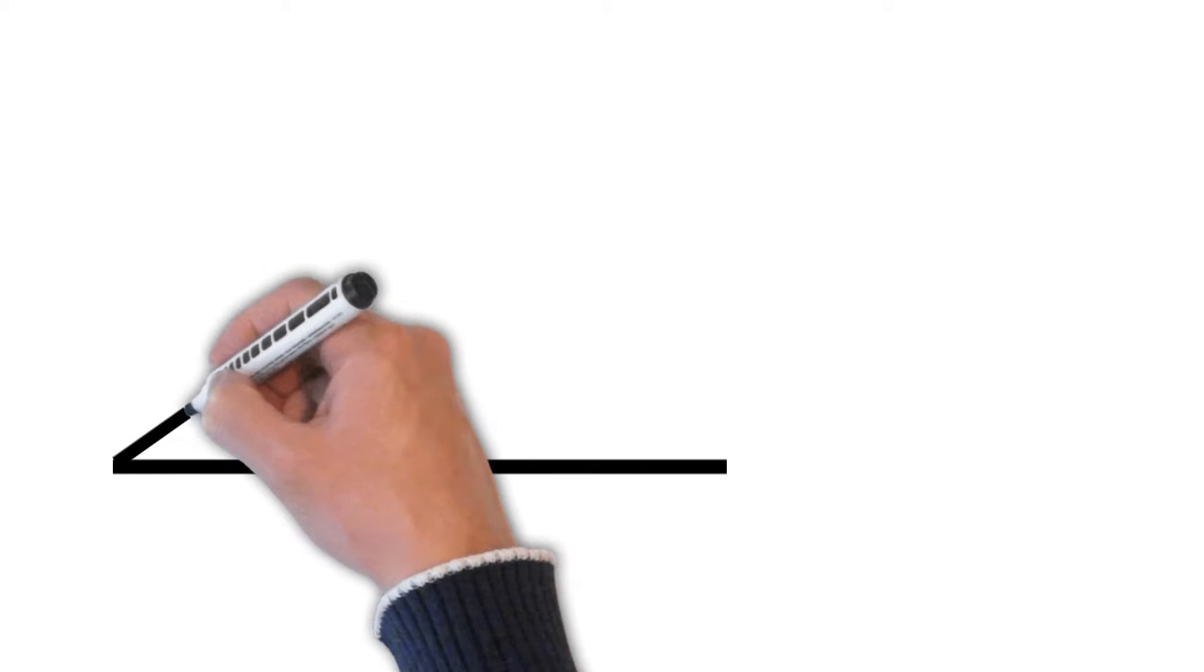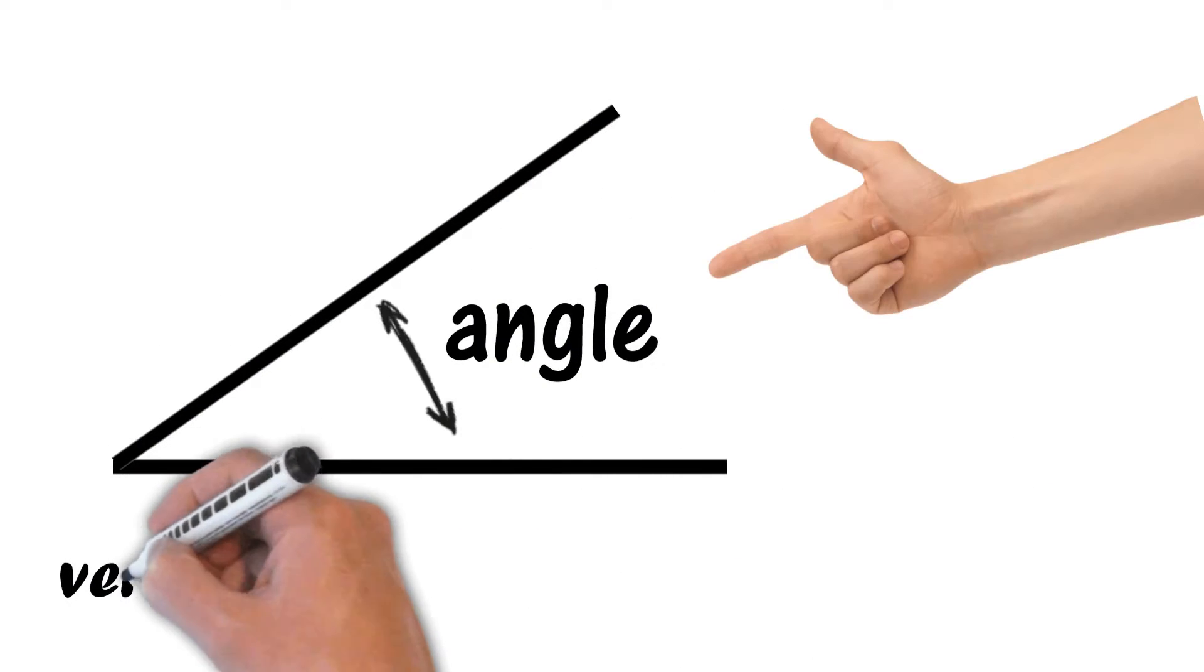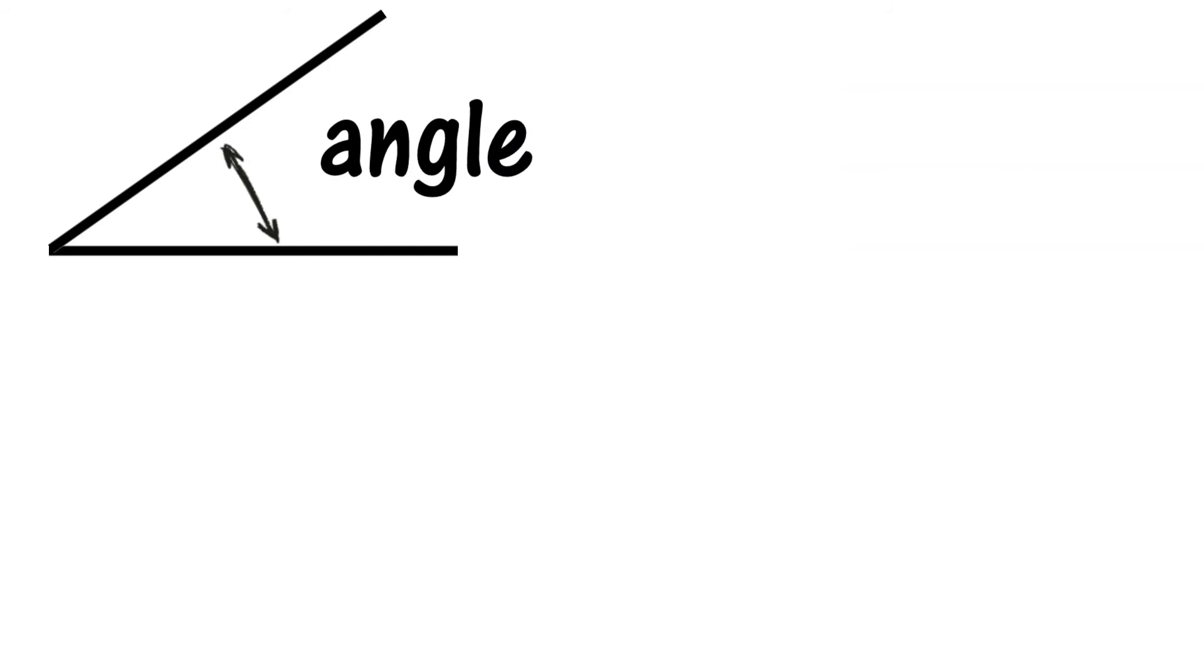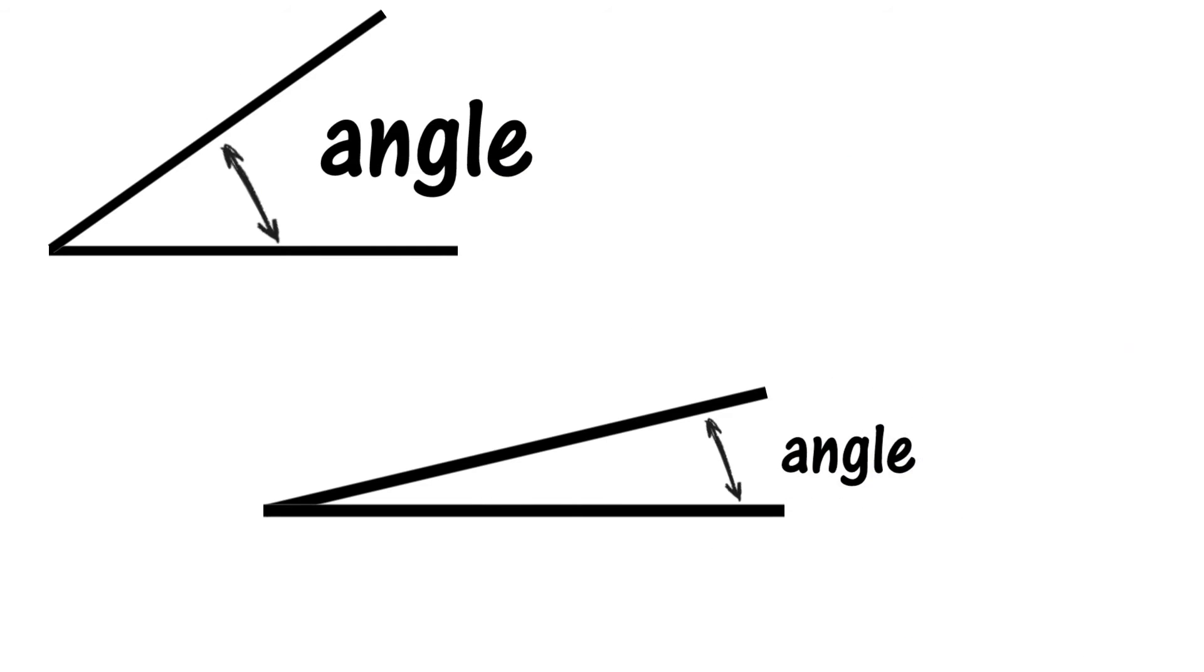An angle is formed when two lines meet at a point. This point is called the vertex. The angle measures how open or closed the space between the lines is.